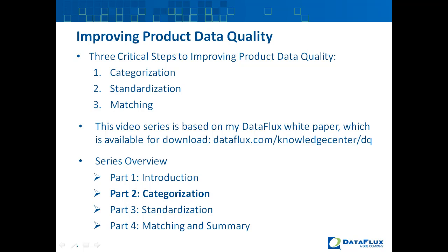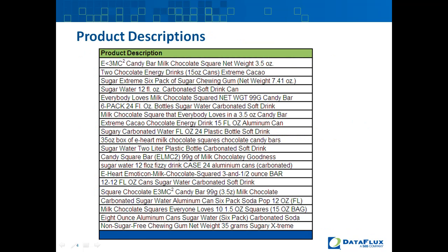This is part two in a four-part video series about improving product data quality. We are focusing on three critical steps: categorization, standardization, and matching. This video series is based on my DataFlux white paper, which is available for download at dataflux.com/knowledge-center/dq. So now let's get into part two's topic: categorization.